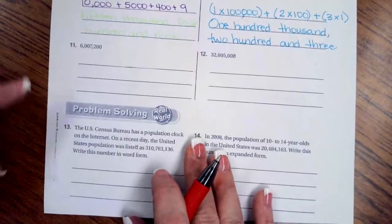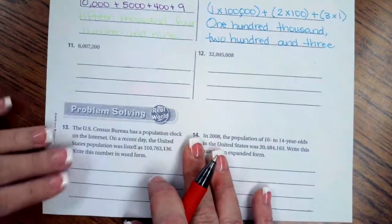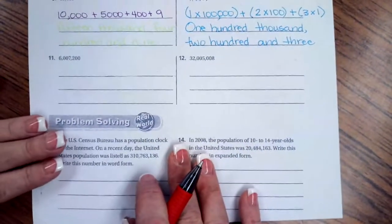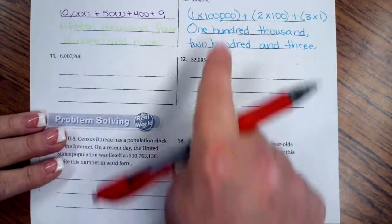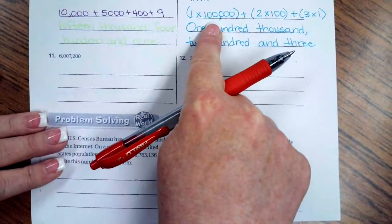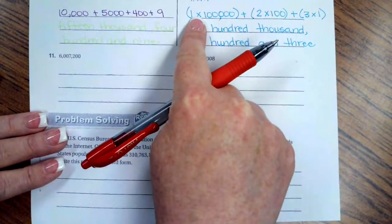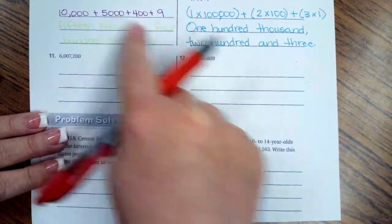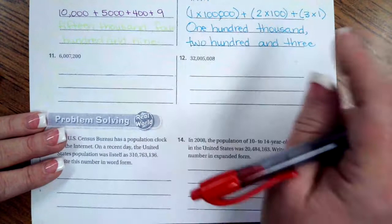So you guys are going to do 11 and 12. Depending on how picky your teacher is, and you're going to know that better than I do, you might want to go with this guy. But these are your two other ways. There's expanded form, which is this or this, and then there's word form.